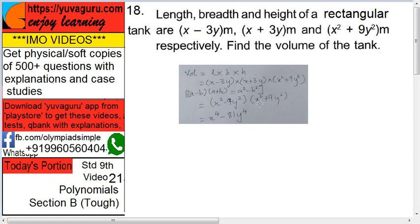Now you again see these two. It again becomes the same a minus b into a plus b. x square becomes a, 9y square becomes b. So again the answer is a square minus b square.